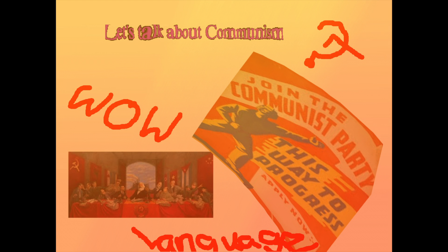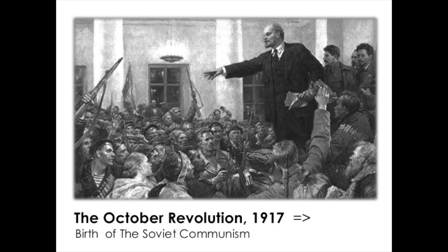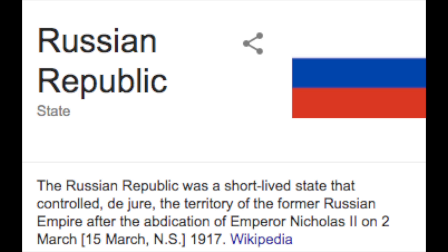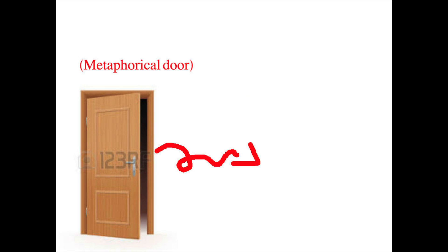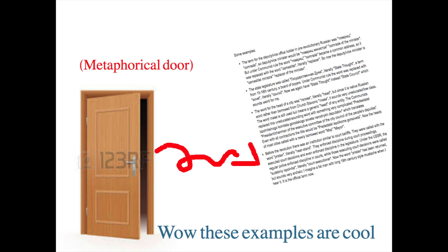Let's talk about communism. Before the communist revolution in the short-lived Russian Republic, Russia was a hereditary monarchy. Like many other domains ruled by monarchies, there is always that linguistic rule of honorific codes when addressing the elite class — but we'll get into that later.